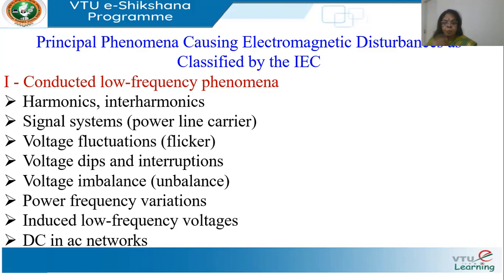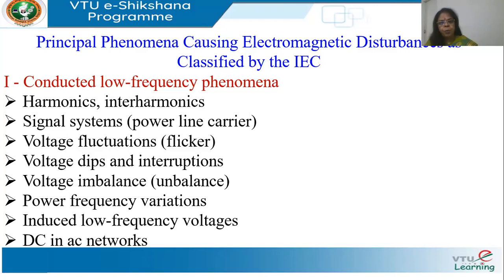Then we have voltage dip — IEC uses the word 'dip' while IEEE uses 'sag', both meaning a reduction from the nominal value — and interruption, where the voltage is close to zero. Then voltage imbalance or unbalance, where all three phases do not have the same voltage, which is primarily caused by faults. Then power frequency variations, where the fundamental frequency is not always exactly 50 Hz but may be 49.9, 49.8, or up to 50.05 and so on.